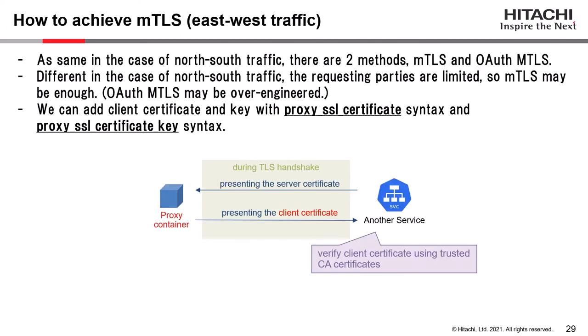How to achieve mTLS in east-west traffic: as with north-south traffic, there are two methods, standard mTLS and OAuth mTLS. But unlike north-south traffic, the requesting parties are limited, so standard mTLS may be sufficient and OAuth mTLS may be over-engineered. We can add the client certificate and key using the proxy_ssl_certificate and proxy_ssl_certificate_key directives in the NGINX proxy container.